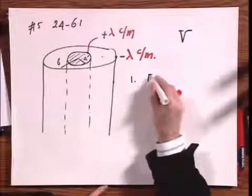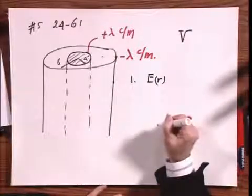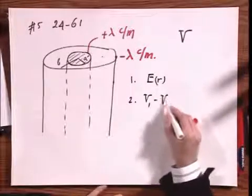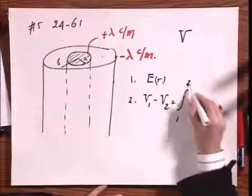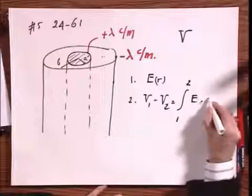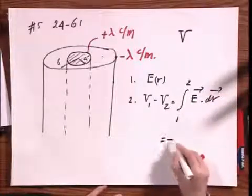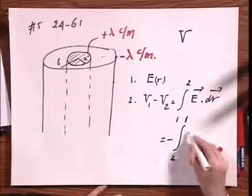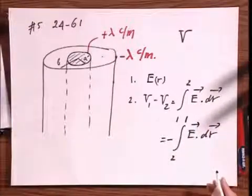First, you calculate what the electric field is at any location R. And then the second thing you do is, you say V at position 1, minus V at position 2, the integral in going from 1 to 2, of E dot dr. And if you prefer the definition in going from 2 to 1, with a minus sign of E dot dr, that will give you, of course, the same answer, whatever you prefer.